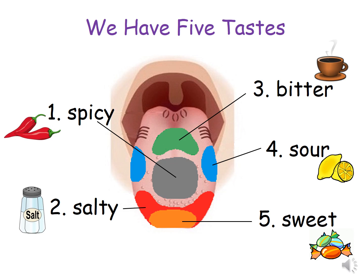3. Bitter. The green area on your tongue is where you taste bitter food and drinks like coffee.